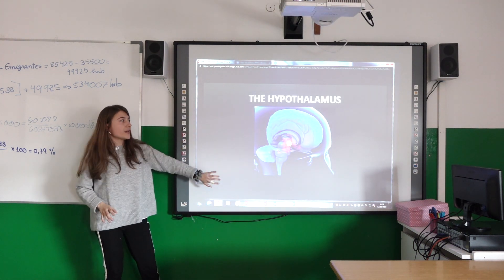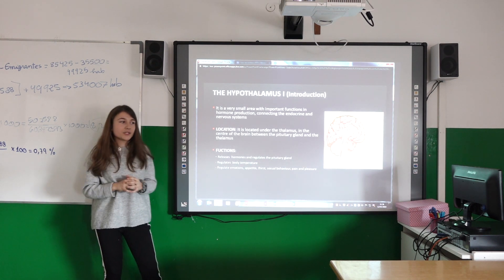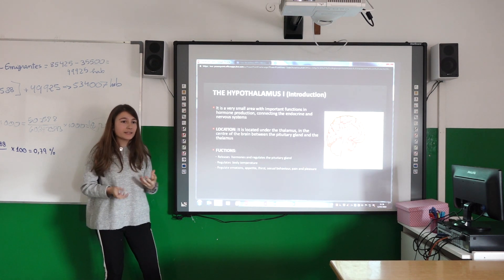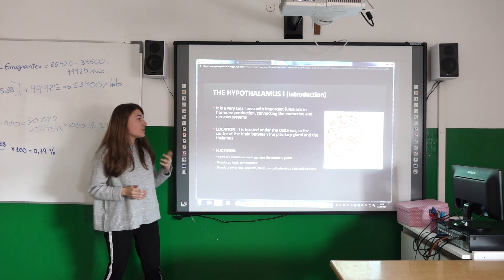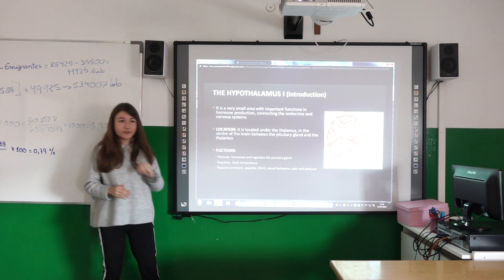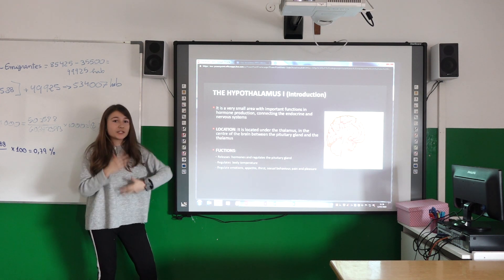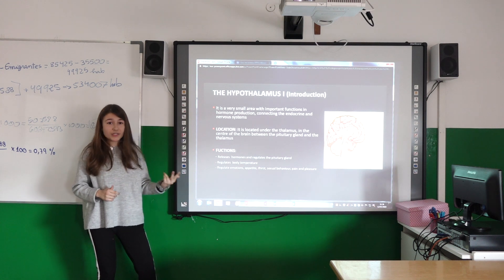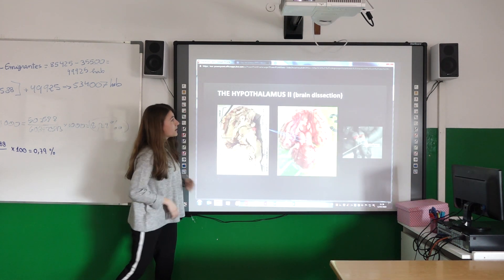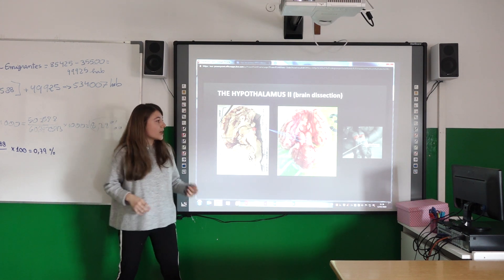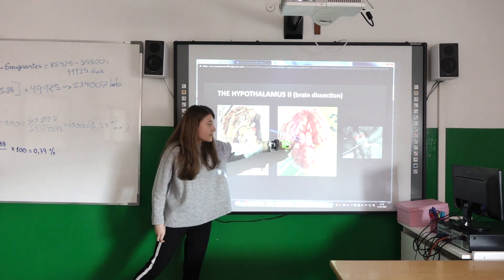Let's continue with the hypothalamus. The hypothalamus is a very important part because it is connected to the pituitary gland, which is an endocrine gland that secretes a lot of hormones. It is located under the thalamus. It is connected to the endocrine gland, so it secretes hormones and regulates body changes. Here you can see a photo of the hypothalamus — as I said, it is under the thalamus.